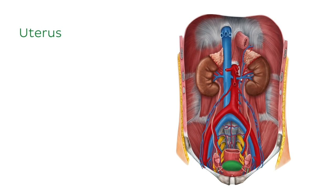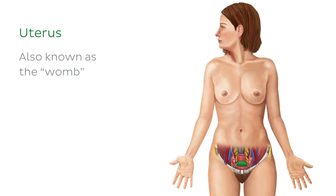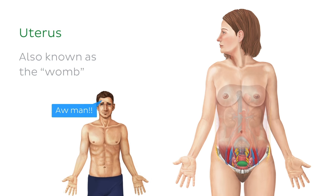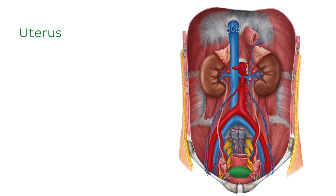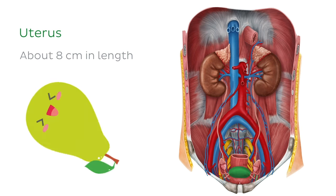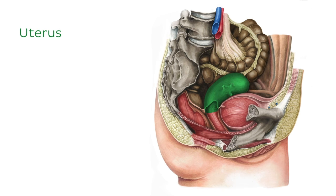The uterus, also known as the womb, is located in the pelvic cavity of a female. You could try to look for it in males, but no luck there. It is a thick-walled muscular structure that lies in the midline, as we can see in our image of the abdominopelvic cavity. The uterus is about 8cm in length, and is roughly the size and shape of an upside-down pear. If we change our perspective to see a sagittal section of the abdominopelvic cavity, we can understand the location of the uterus and its relationship to other structures a little better.